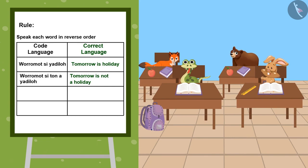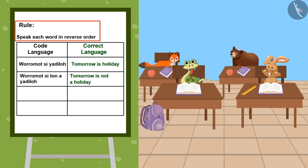Bholu, there is no fixed rule for making patterns. You can use any rule to make new patterns and code. What is the rule for this code? We are speaking each word in reverse order. Kids, you can pause the video and use this rule to speak or write something.